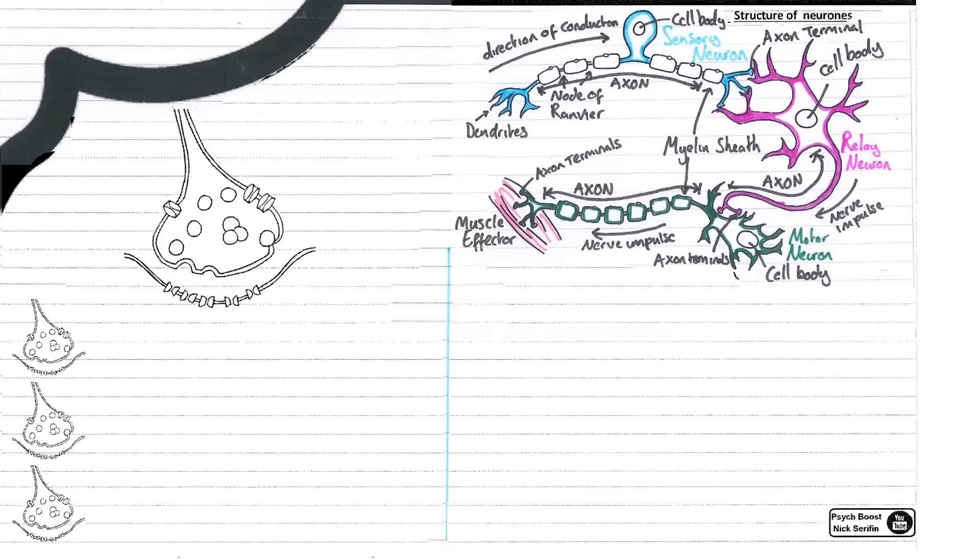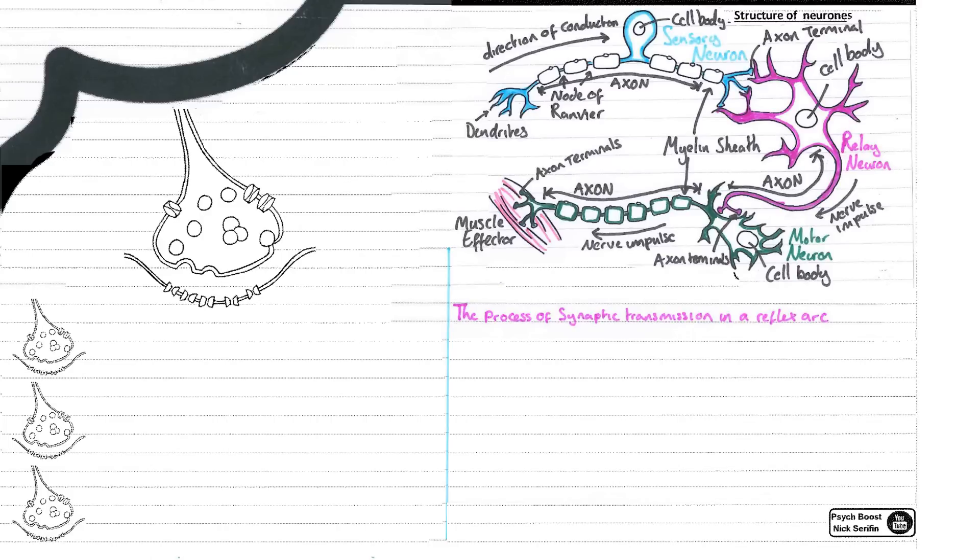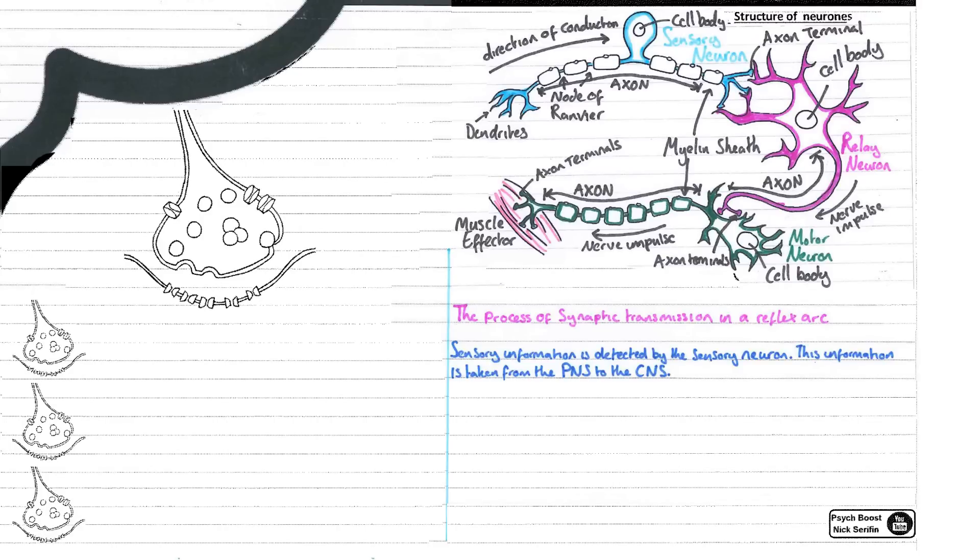This is the reflex arc. So a range of sensory information could be detected by a sensory neuron. This information is taken from the peripheral nervous system - sensory neurons are going to form part of the peripheral nervous system. This is then going to be taken to the central nervous system, which is the role of the relay neuron. It's a simplified diagram, and generally the relay neuron will transfer the information to the central nervous system.